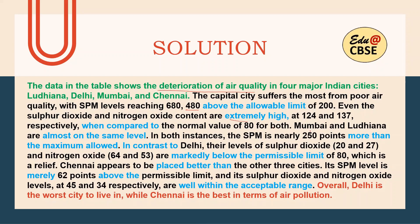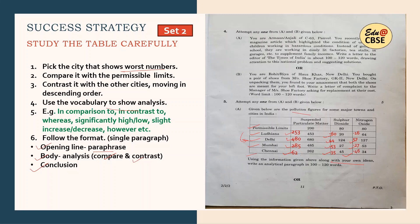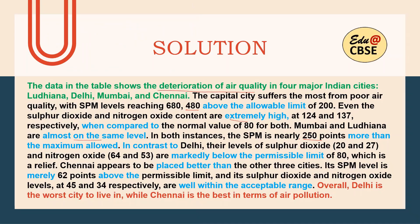Next, I'll be taking Mumbai and Ludhiana. Mumbai and Ludhiana are almost on the same level. In both instances, the SPM is nearly 250 points more than the maximum allowed — Ludhiana is 253 more and Mumbai is 285 more, so rounding to approximately 250 — in contrast to Delhi. Their levels of sulfur dioxide at 20 and 27, and nitrogen oxide at 64 and 53, are markedly below the permissible limit, which is a relief in contrast to Delhi.